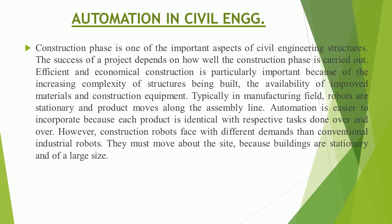Typically in the manufacturing field, robots are stationary and the product moves along the assembly line. Automation is easier to incorporate because each product is identical, with respective tasks done over and over. However, construction robots face different demands than conventional industrial robots — they must move about the site, because buildings are stationary and of a large size.